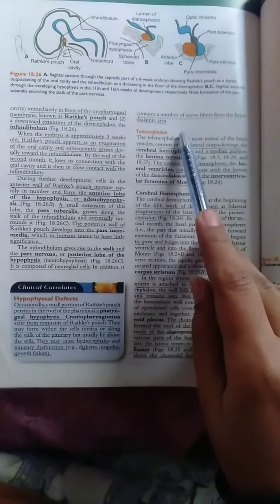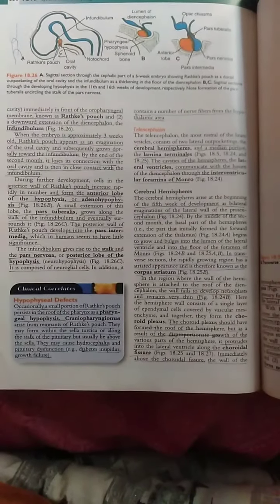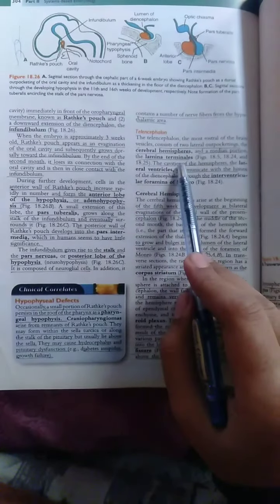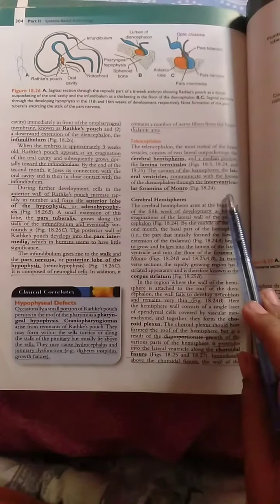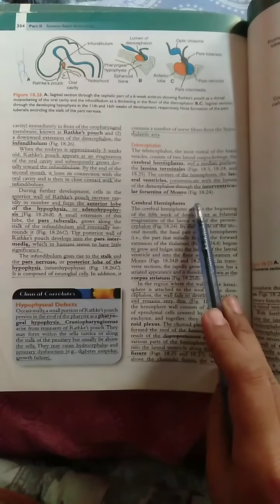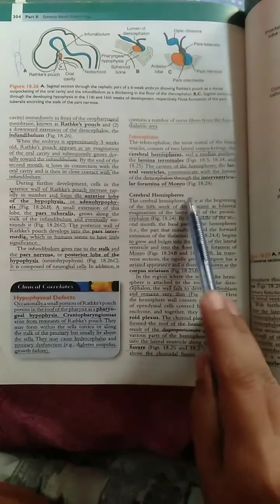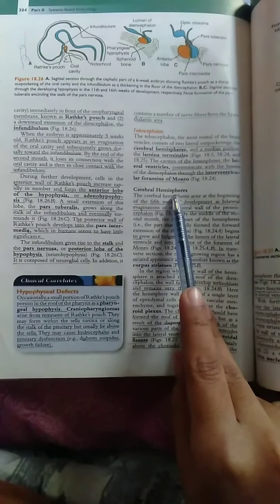Just remember that Telencephalon has two cerebral hemispheres separated by lamina terminalis, and the interventricular foramen of Monro connects the lateral ventricle and third ventricle. Cerebral hemispheres arise at the beginning of the 5th week.